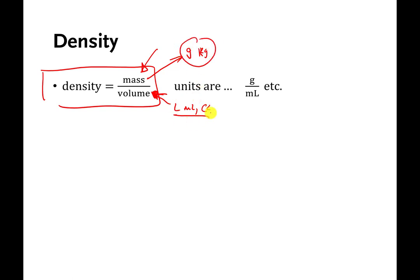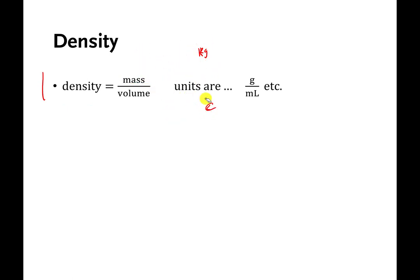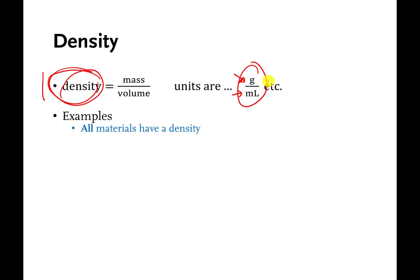Units for volume are liters, milliliters, or cubic centimeters. Those units don't cancel each other, so you have a mass unit in the numerator and a volume unit in the denominator. When you perform a density calculation, the units will always be some mass number divided by a volume number. A common unit for density is grams per milliliter, but it doesn't have to be.